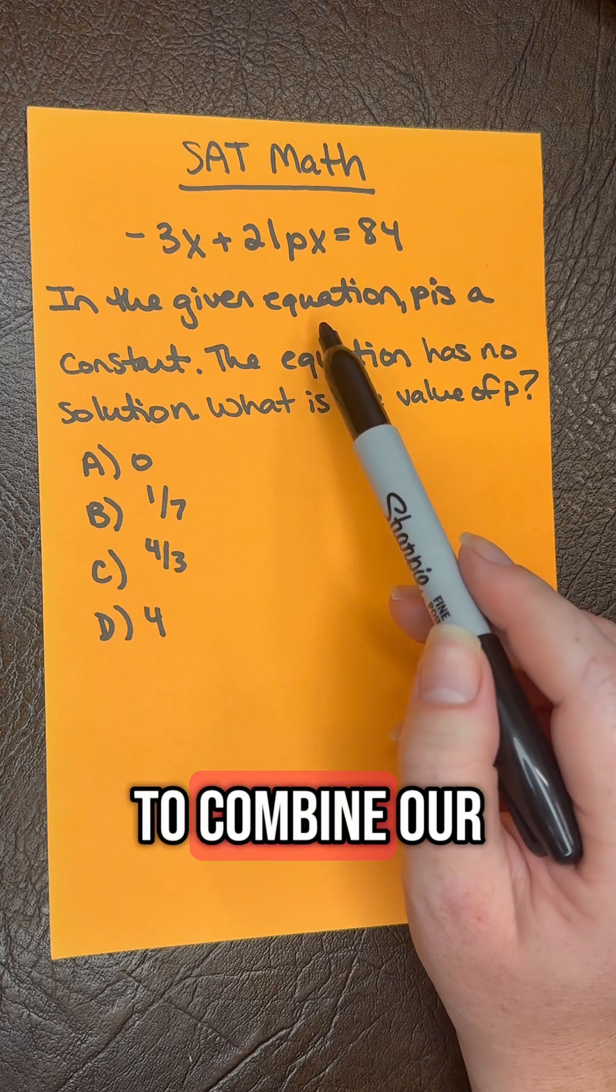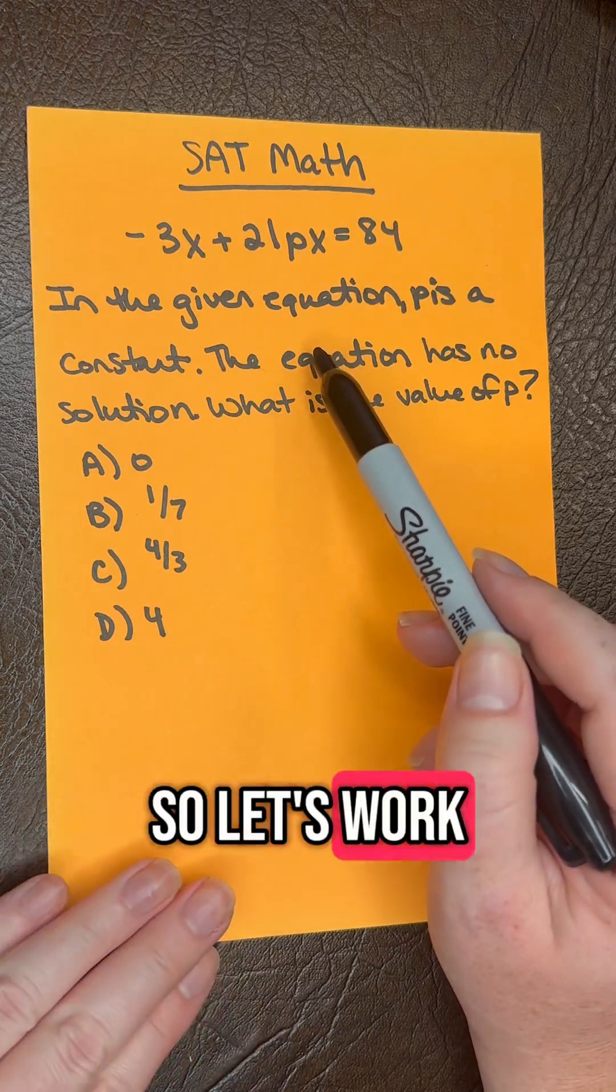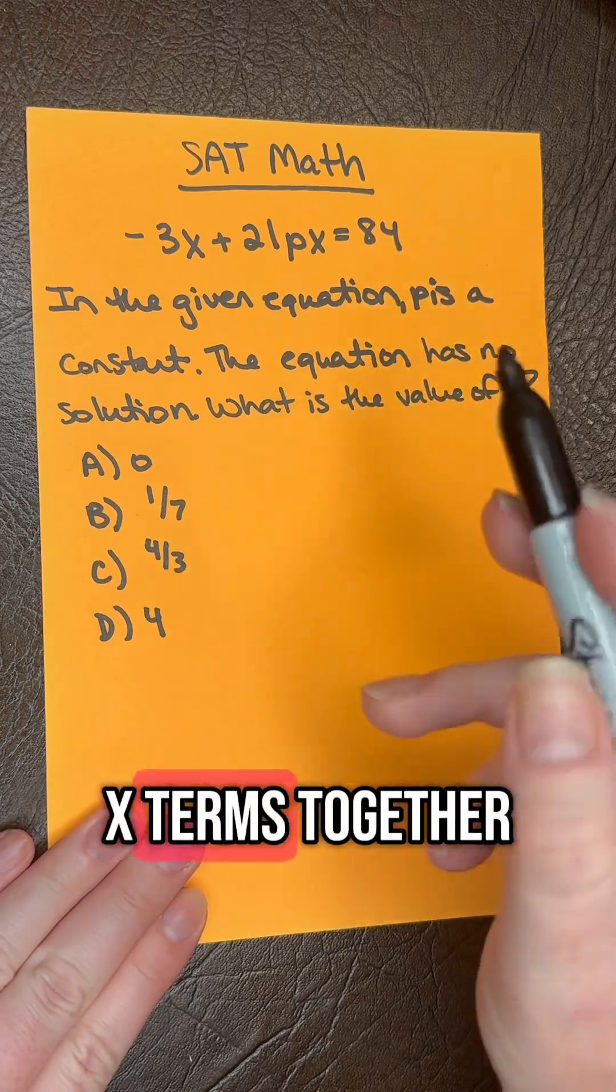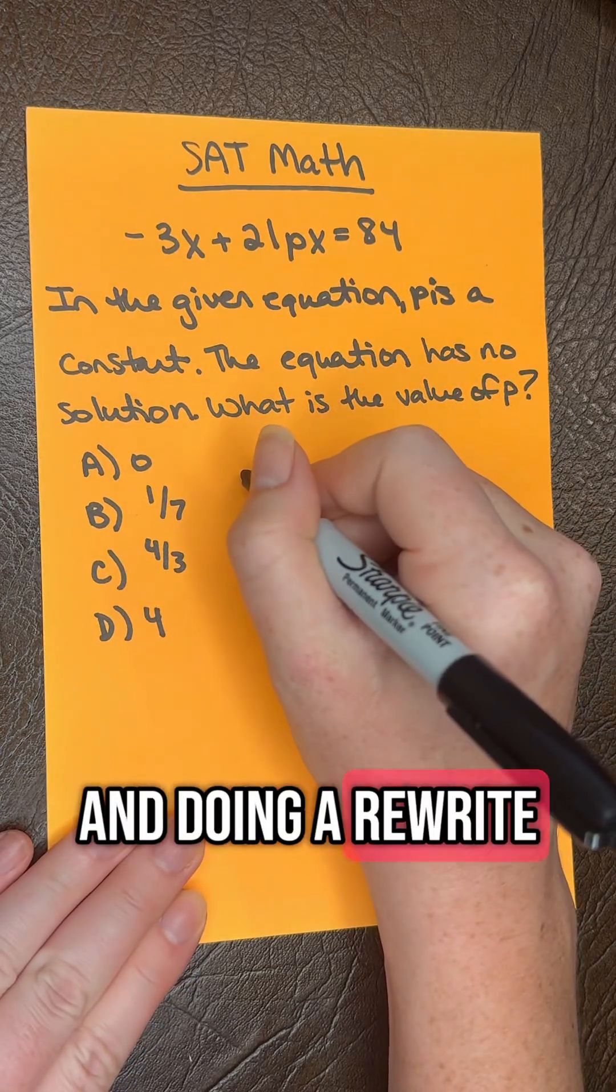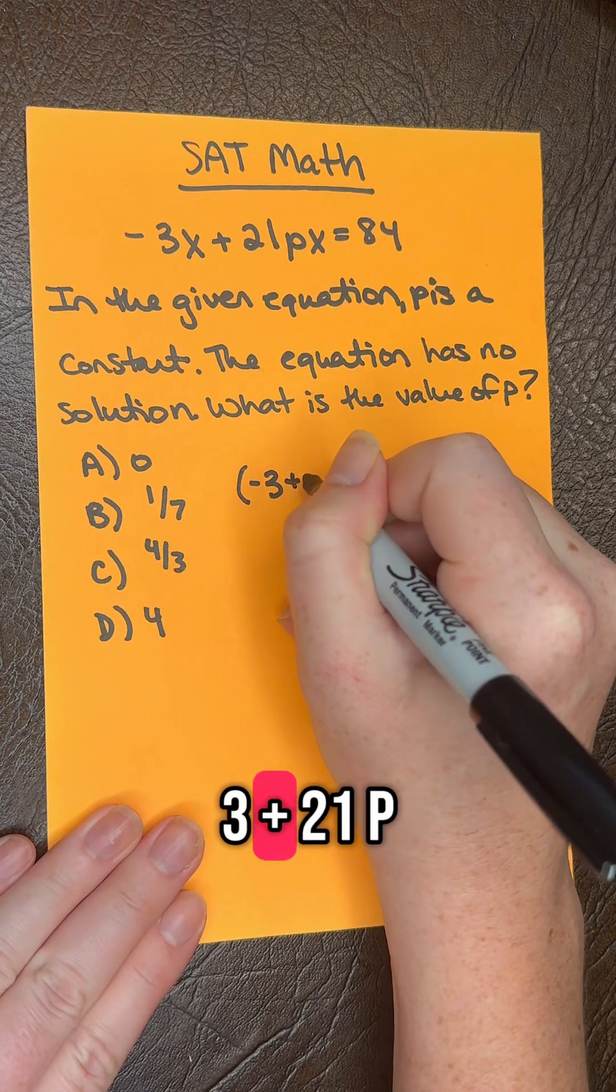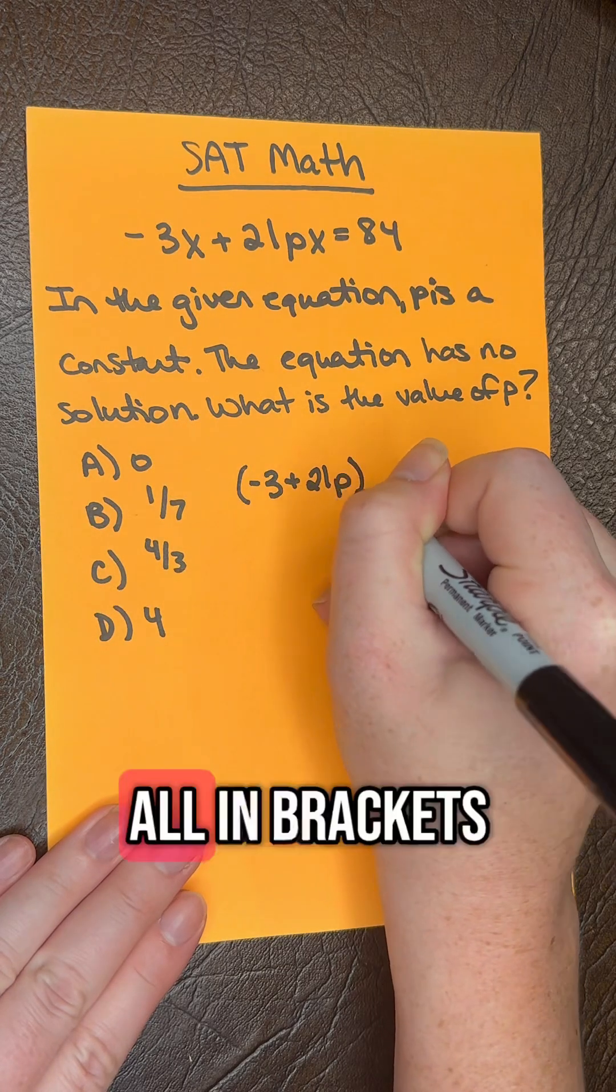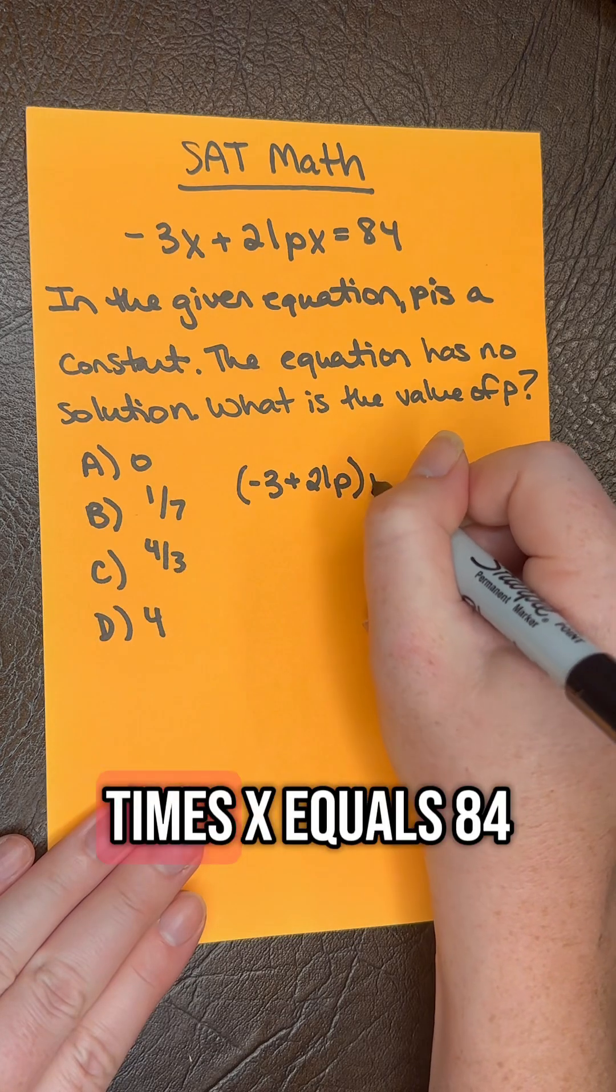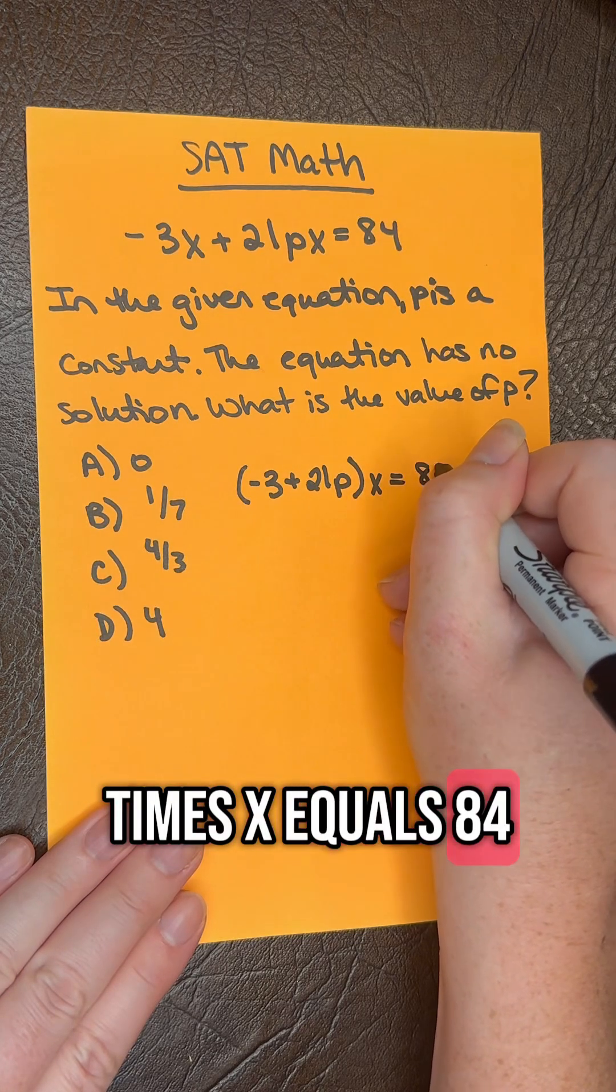we're going to combine our like terms. So let's work on grouping the X terms together and doing a rewrite. So we're going to say negative three plus 21P, all in brackets, times X equals 84.